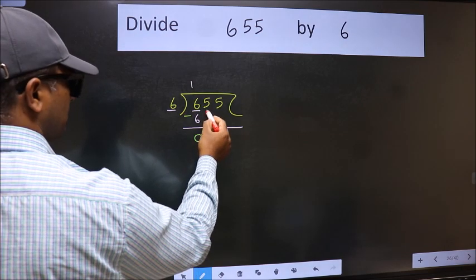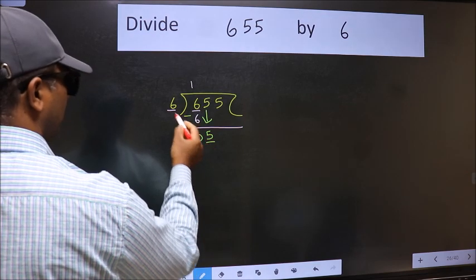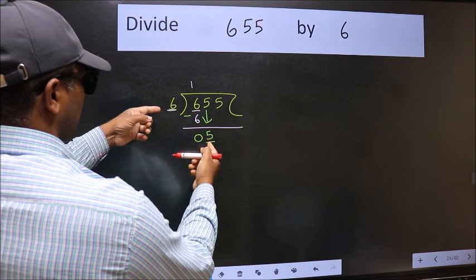After this, bring down the beside number. So 5 down. Now here we have 5 and here 6. 5 is smaller than 6.